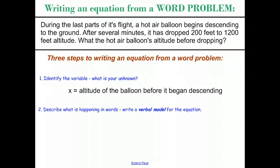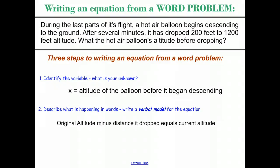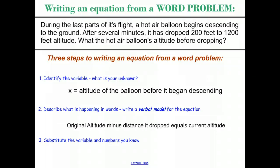Step two. Describe what's happening in words. Write a verbal model for the equation. Now, it's not going to be quite as simple as the verbal models we saw before, but let's take a look at this word problem one more time. We're starting out at a certain elevation. So let's say the original altitude. After we go through the original altitude, we drop by a certain amount of feet. The original altitude minus what we drop gives us our current altitude. One more time. Where we started with the hot air balloon minus the number of feet that we dropped gives us the altitude currently. So our verbal model is original altitude minus distance it dropped equals current altitude. And from that, we can substitute in the numbers and the variables that we know and create an equation. Original altitude is x minus the 200 it dropped equals 1200.